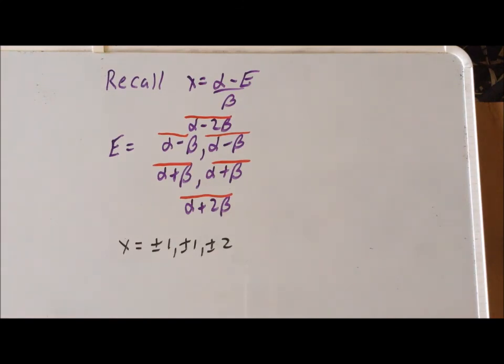Therefore, using the Huckel method, we were able to generate, to derive the energies of the pi conjugated system in benzene. Thank you very much for your attention. Have a good one.